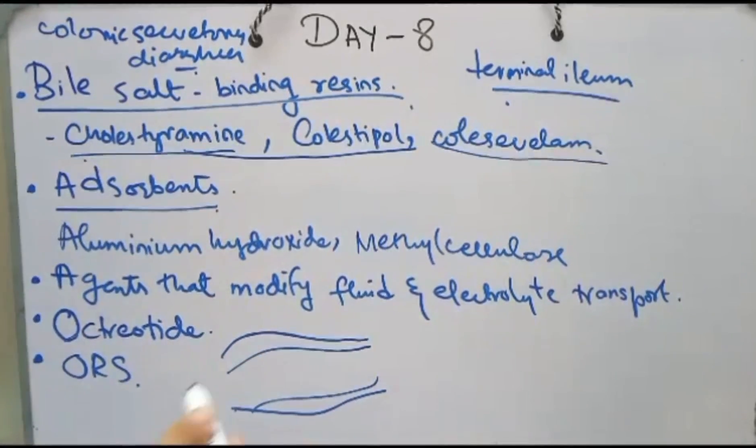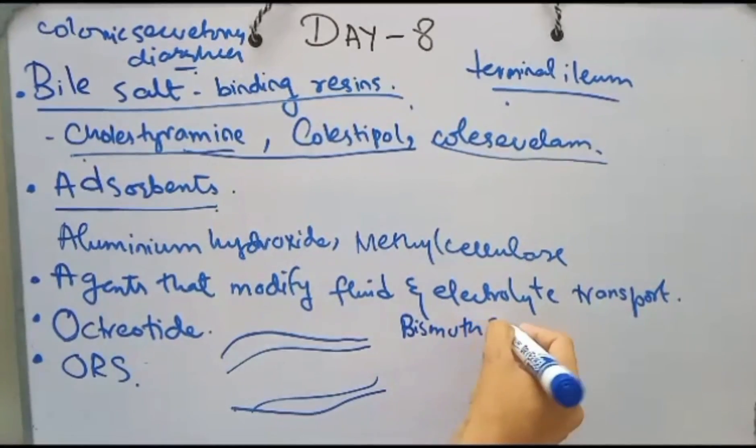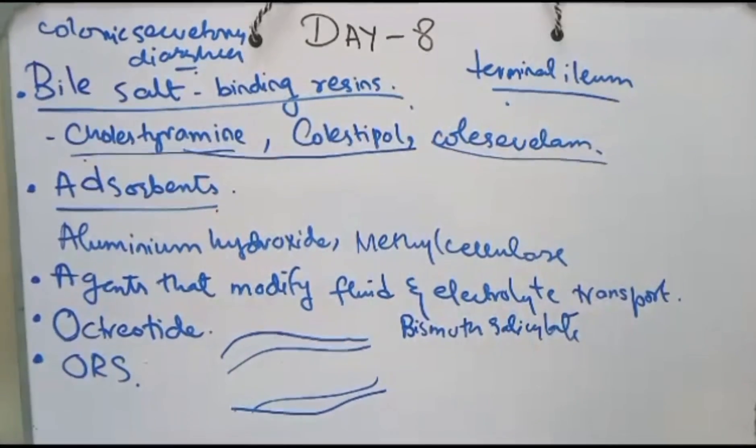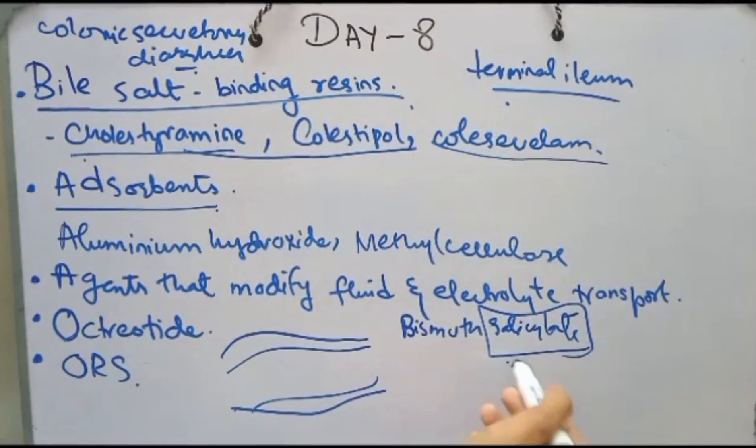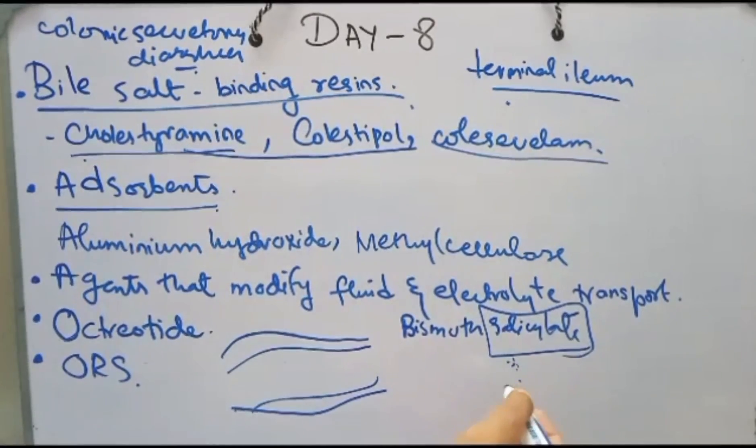Agents that modify fluid and electrolyte transport include bismuth salicylate. It is used for prevention and treatment of traveler's diarrhea. It decreases fluid secretion in the bowel, and this action is due to its salicylate component. It also provides a coating agent effect.